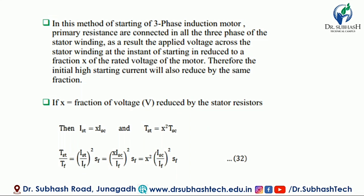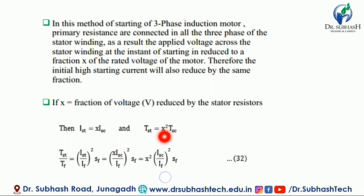If X is the fraction of voltage reduced by stator resistance, then IST (starting current) equals X into Isc. And the starting torque equals X squared into T full load torque.